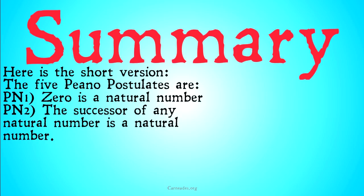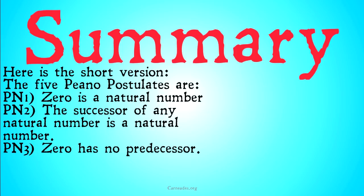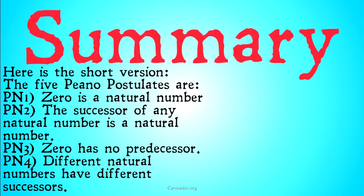Number three: 0 has no predecessor. We're told that 0 was a natural number, and this postulate is telling us that 0 has no predecessor — 0 is the first natural number. There does not exist a single natural number whose successor is 0. Number four: different natural numbers have different successors. Basically, this is saying that our stream does not branch. You have no numbers who have a single number that has two different successors, or two different numbers that have the same successor. There are no branches — it's a single straight line.